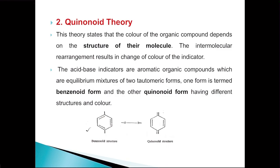The next theory is quinonoid theory. As per this theory, the color of an organic compound depends upon the structure of its molecule. The intermolecular rearrangement results in the change in color of the indicator. Acid-base indicators are aromatic organic compounds and they exist as equilibrium mixtures of two tautomeric forms — one is called the benzenoid form and the other one is called the quinonoid form — and both have some structural differences as shown here.